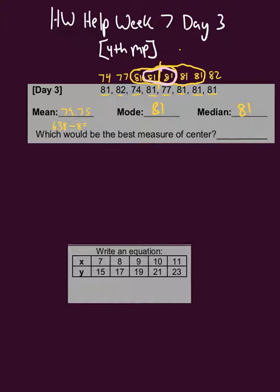So the question says which would be the best measure of center. Well if we're going through here, you can choose mean if the numbers are close together and there's no gaps. So the numbers are close together, they're all from 74 to 82, and there are no big gaps so you could choose mean.